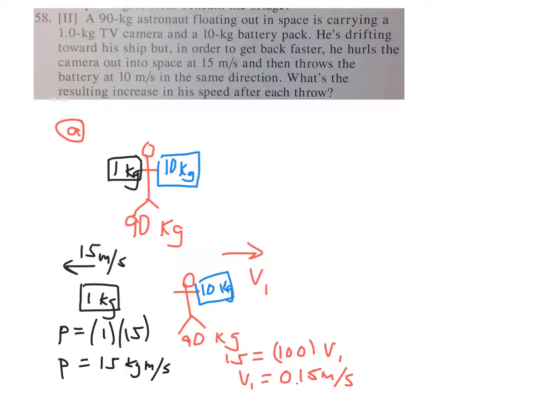Now the increase in speed for the second part. We're starting from scratch again. The astronaut's moving but if we treat the before and after, we want to look at the comparison. We assume like part A where you have the astronaut holding the backpack, total mass of 100, to see what the change is.